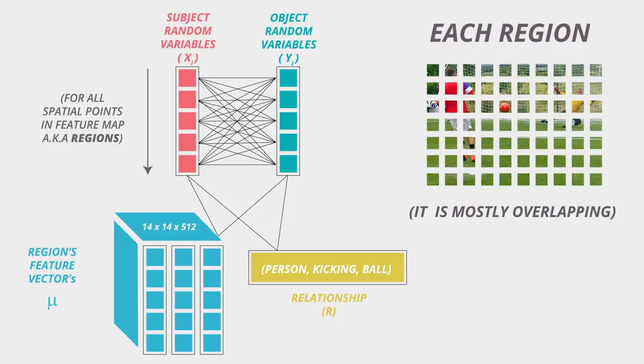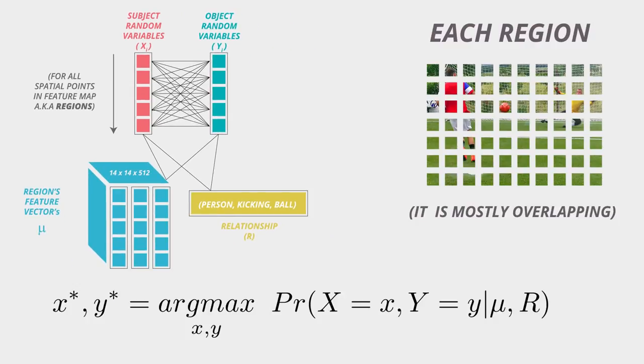So the task is to assign the correct random variables to the point in the feature maps such that the conditional probability of x being the part of the subject and y being part of the object regions given the predicate and the image is maximized.